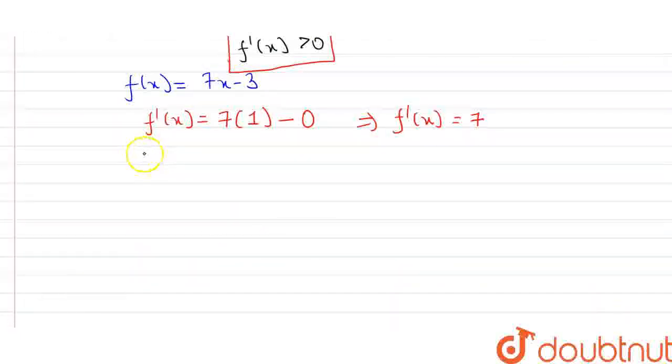We can say that for x belonging to R, that is real numbers, f'(x) is always greater than 0. This is because it is not depending on x, it is independent of x, because there is no x term.